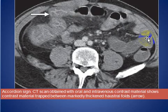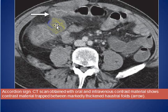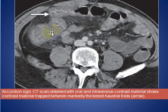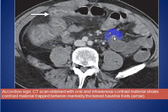Here we see the sign we call the accordion sign. The CT scan is obtained after intravenous contrast and water. We see the contrast trapped between the markedly thickened haustral folds — we call this the accordion sign. There is also stranding of the mesentery and thickening of the peritoneum layers.